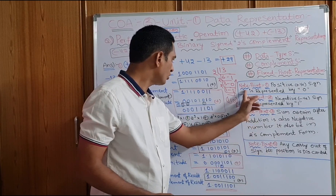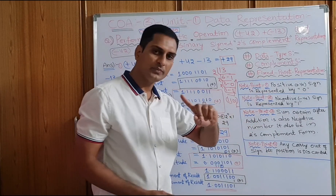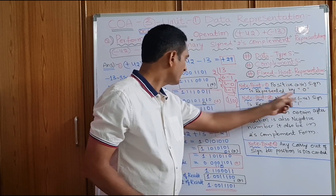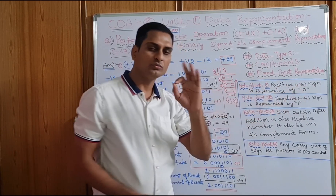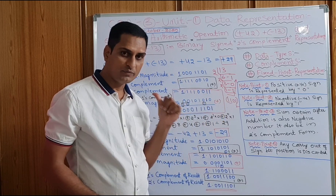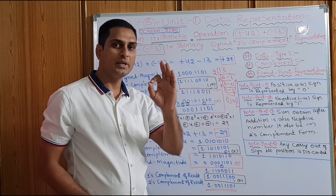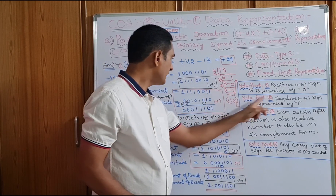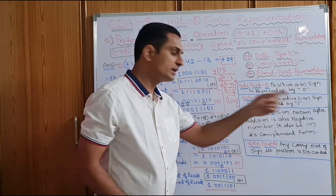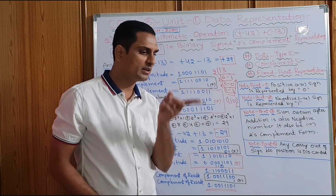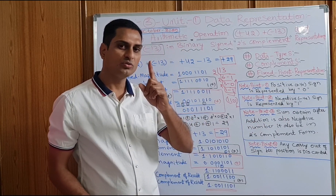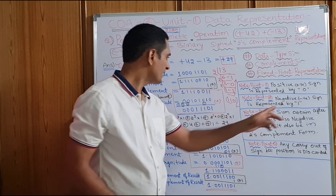Here I have written a note point. Note point 1: positive sign is represented by 0. If the number is a positive number, the leftmost bit will be represented with 0. Negative number sign is represented with 1. Keep a mnemonic — take the negative sign and make it vertical, it will become a 1. So negative number is represented with 1.